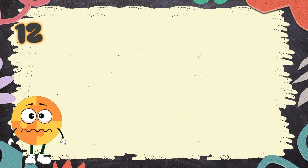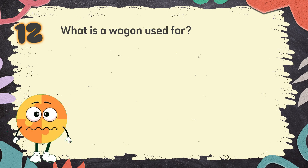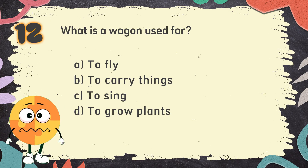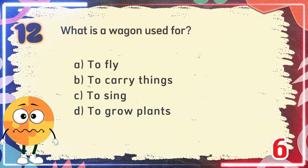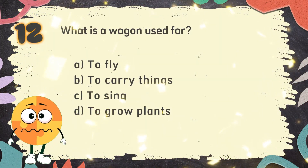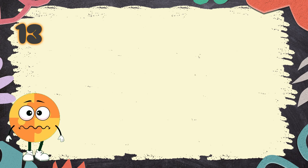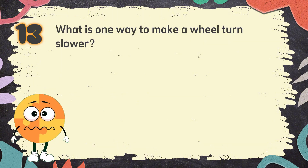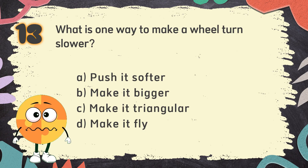Number 12. What is a wagon used for? The choices are: A. To fly. B. To carry things. C. To sing. D. The wheels turn. Number 13. What is one way to make a wheel turn slower? The choices are: A. Push it softer. B. Make it bigger. C. Make it triangular. D. Make it fly. The correct answer is A. Push it softer.